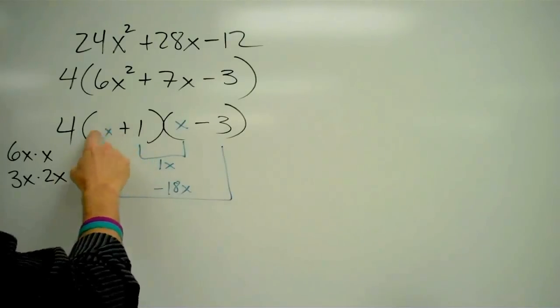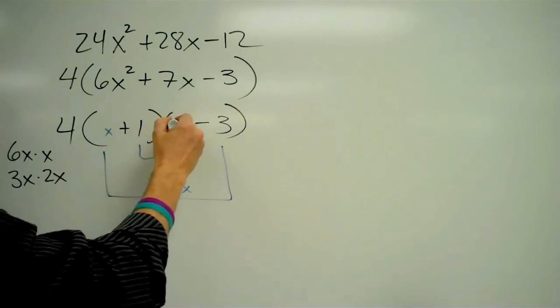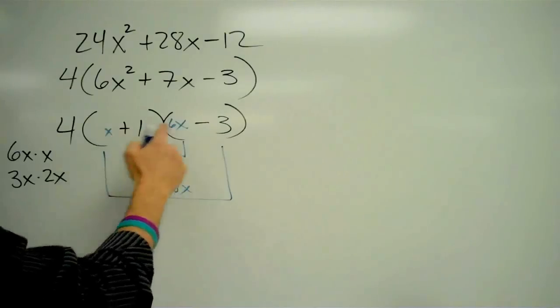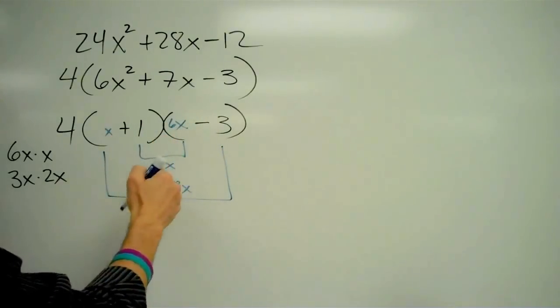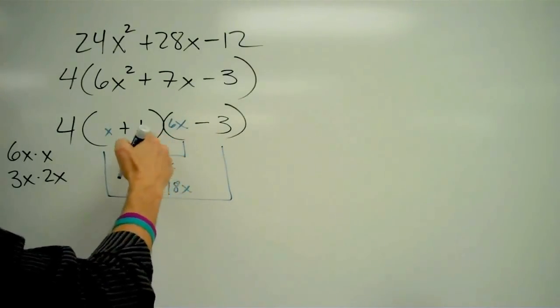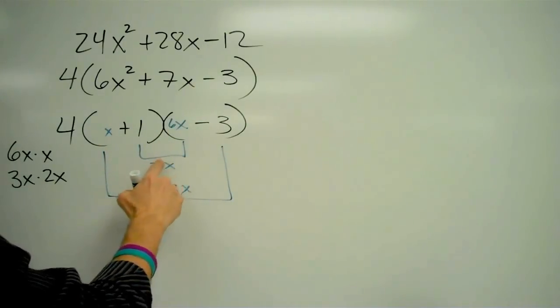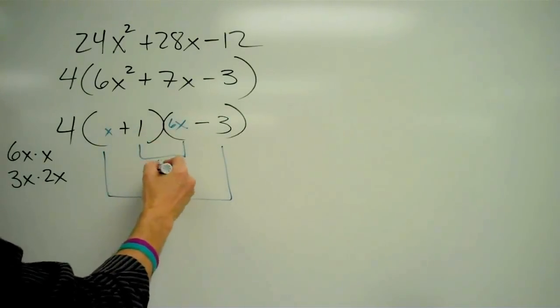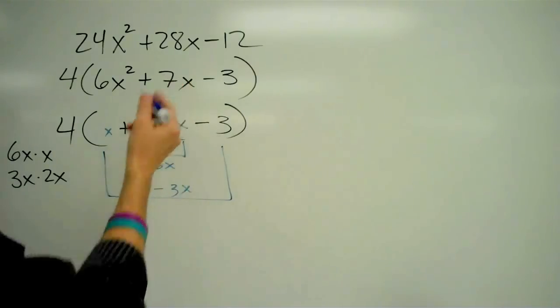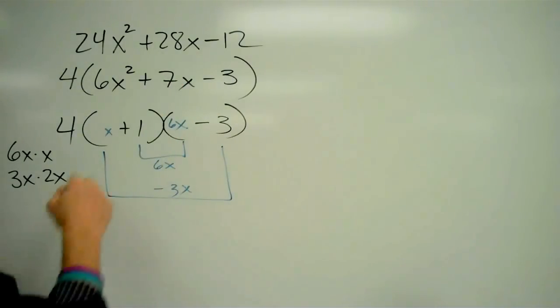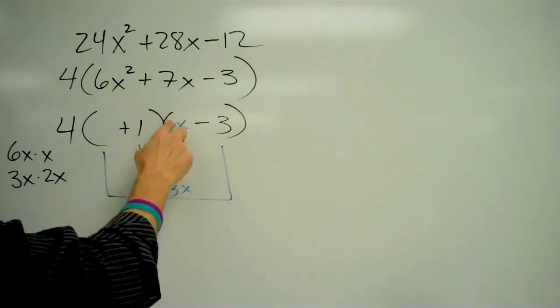Let me try the other way around. Let me try the x here and the 6x here. And I'll get x times negative 3 is negative 3x. I'm sorry, x times negative 3 is negative 3x down here. And 1 times 6x is 6x here. And 6x minus 3x also doesn't equal 7x. So the 6x and the x aren't working out.